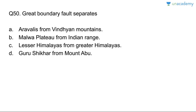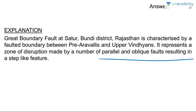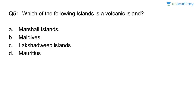Question fifty: the Great Boundary Fault separates which features? The Aravalli Hills are separated from the Vindhyan mountains by the Great Boundary Fault. It is located in the Satur-Bundi district in Rajasthan, characterized by a faulted boundary between pre-Aravalli and upper Vindhyan formations, representing a zone of disruption made by parallel and oblique faults resulting in a step-like feature.